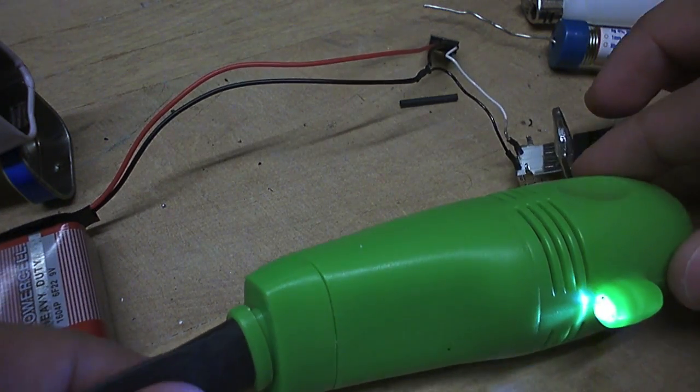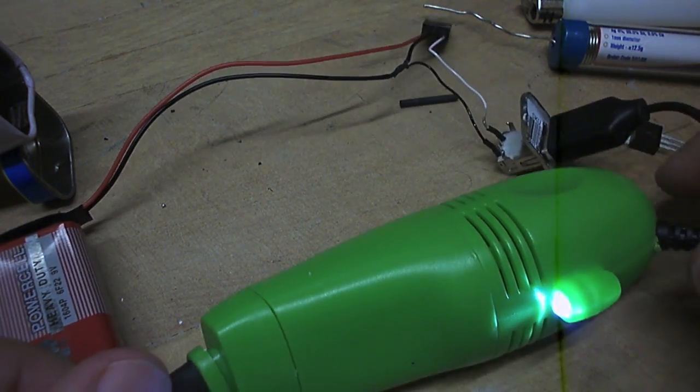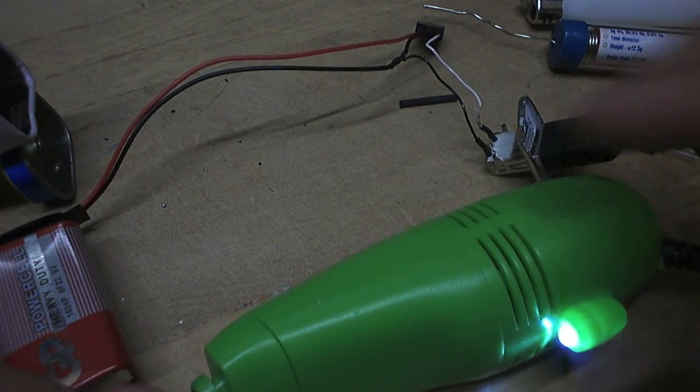There we go, the little light's on, which tells us that the 5V is passing through the connection. So we have it.